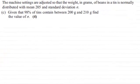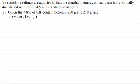Hi there. For this question we're told that the machine settings are adjusted so that the weight in grams of beans in a tin is normally distributed with mean 205 and standard deviation sigma. Given that 98% of the tins contain between 200 grams and 210 grams, find the value of sigma for four marks.